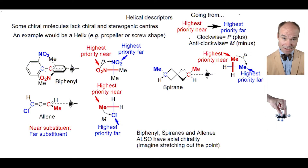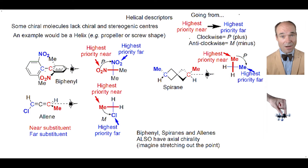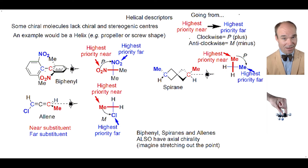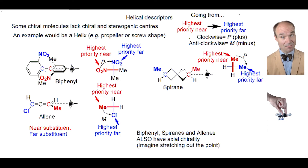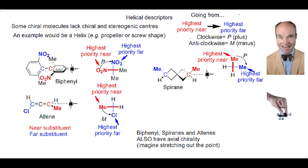IUPAC felt you weren't confused enough. So while helices are provided the descriptors M and P, axial chirality can also be described as R or S, with an optional 'a' in front to indicate axial chirality. Thus, if your molecule is both a helix and axial — such as biphenyl, spirane, or allene — it can be indicated as both M or P and R or S.